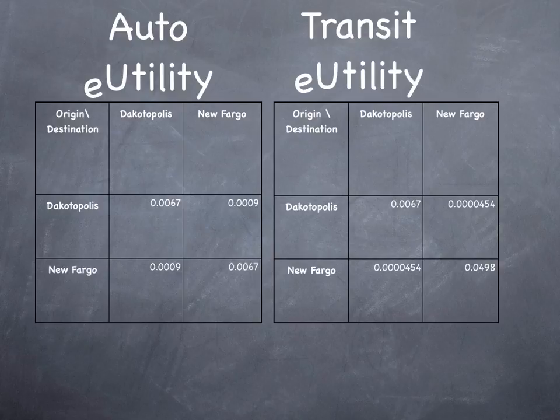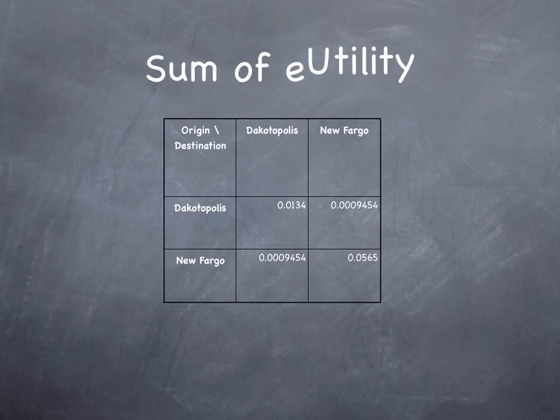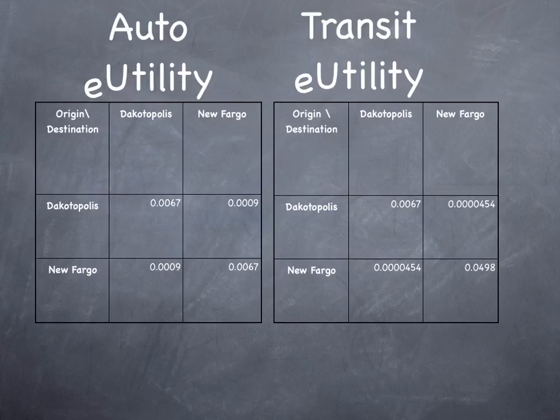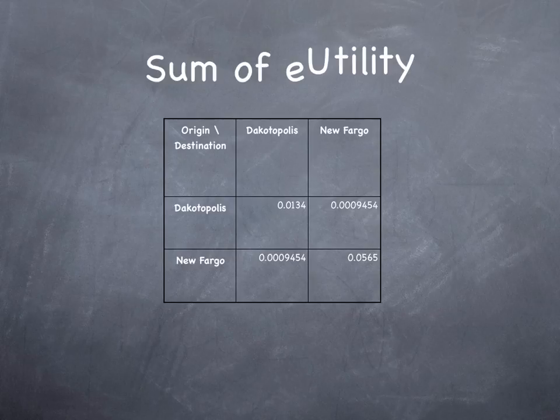The next step is to sum the utilities across modes. We add the exponentiated utility by auto to the exponentiated utility by transit, and that gives us the sum of the exponentiated utilities. In the case of Dakotopolis, we're adding 0.0067 to 0.0067, and that gives us 0.0134 for intrazonal trips in Dakotopolis. Similarly, for Dakotopolis to New Fargo, we're adding 0.0009 plus 0.0000454 to give us 0.0009454. We do the same for the two origin-destination pairs in New Fargo and get the results as shown.